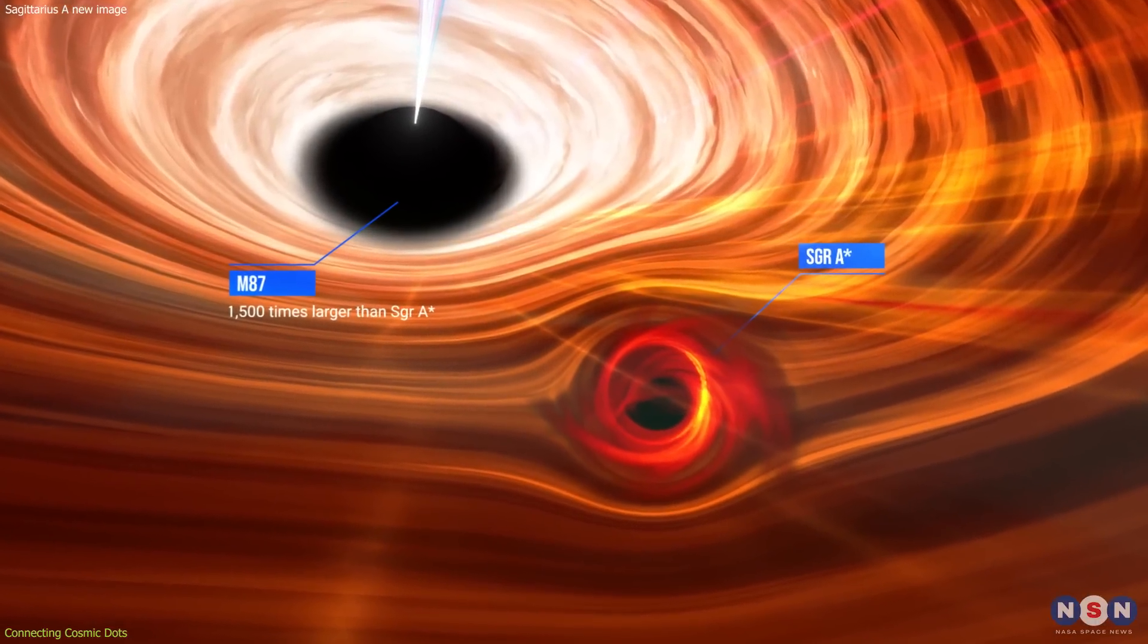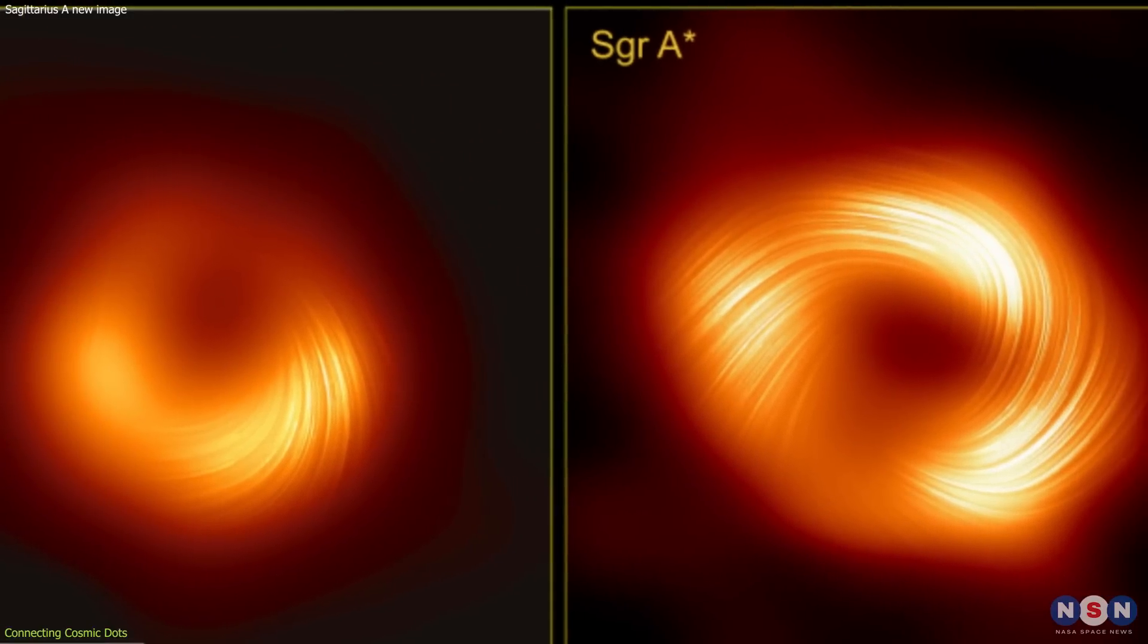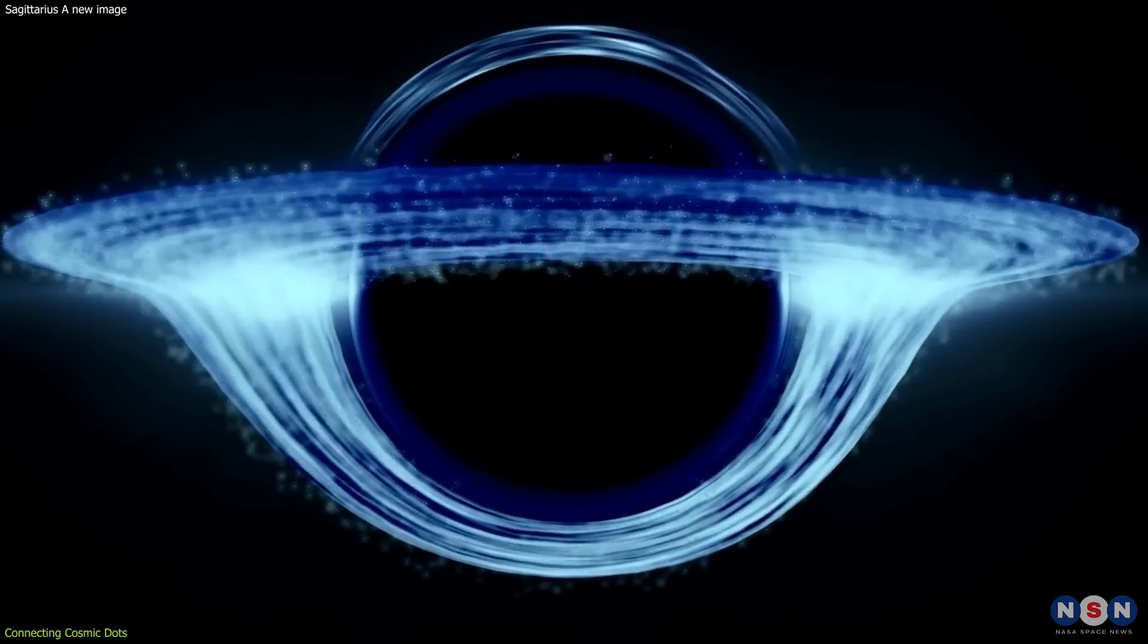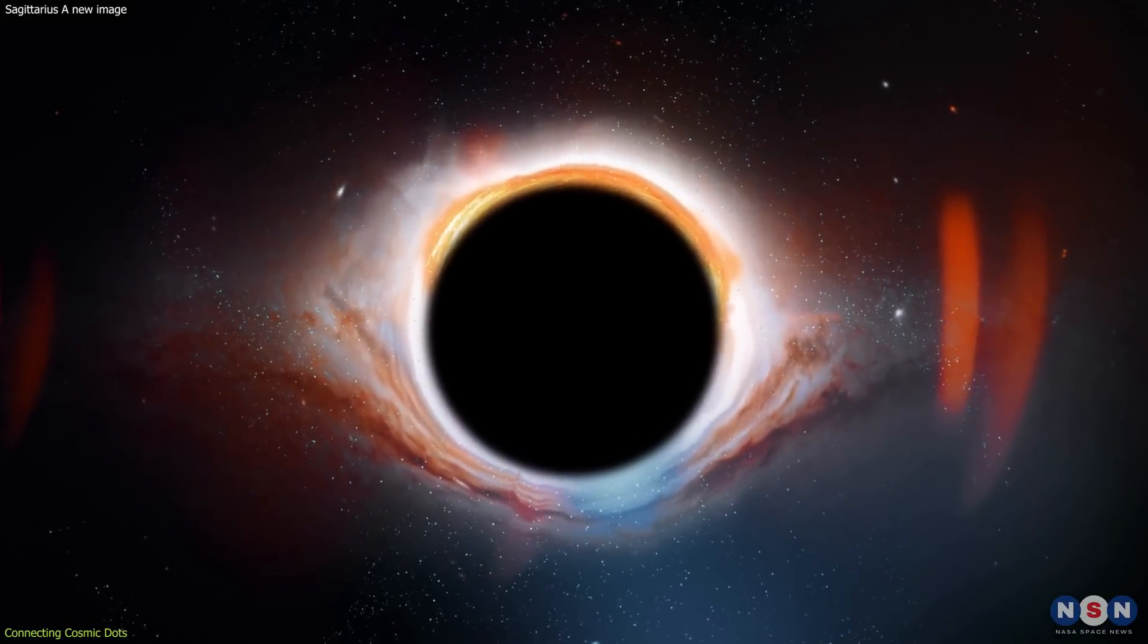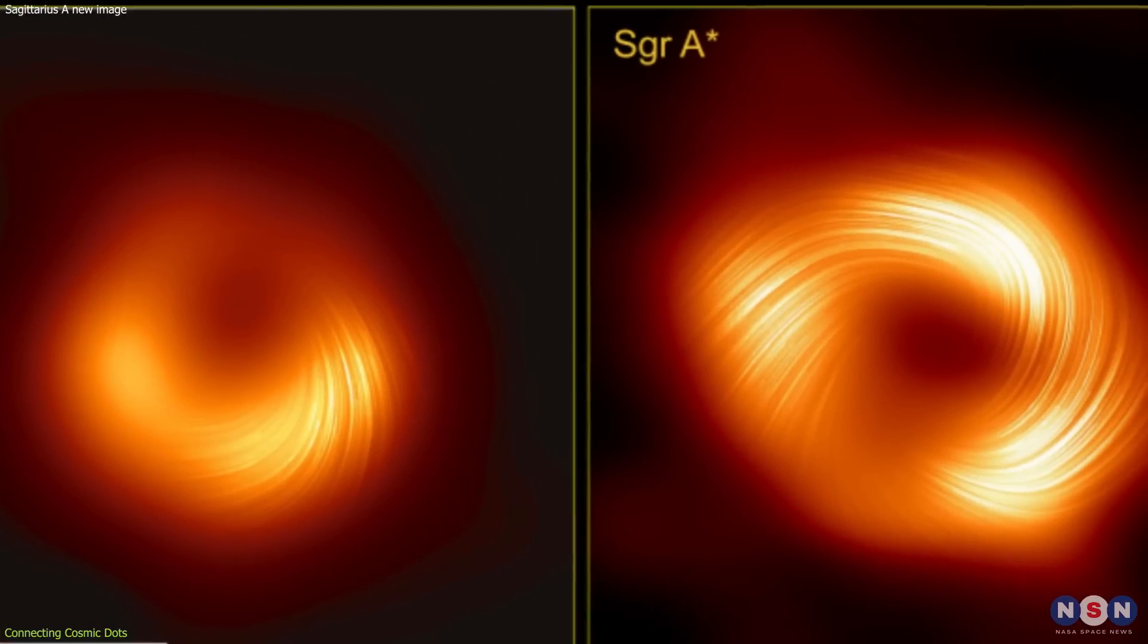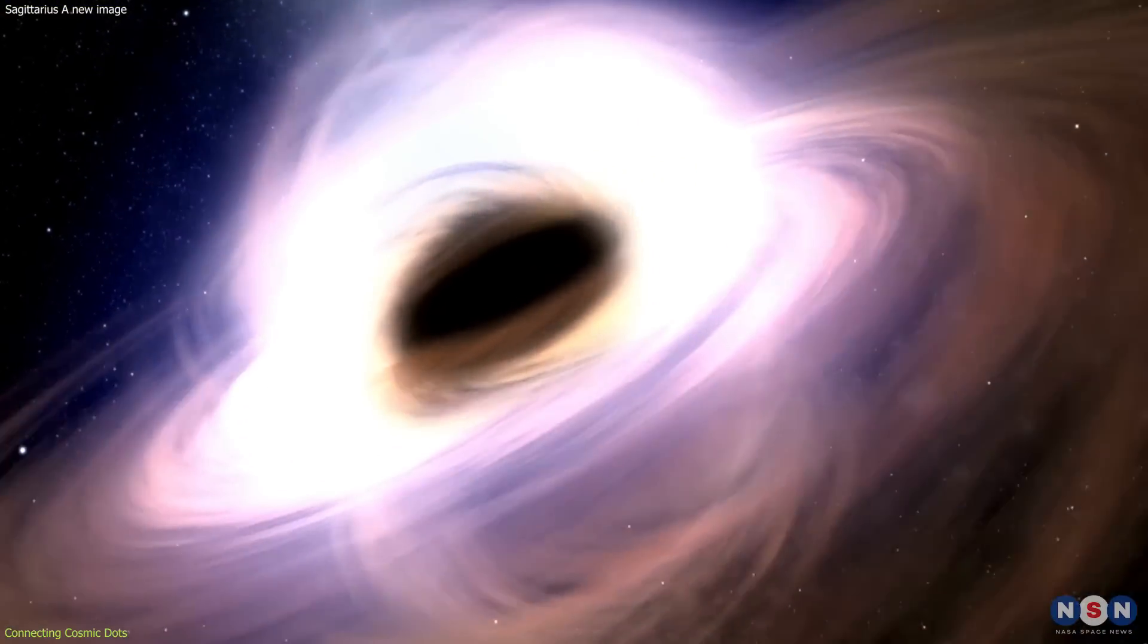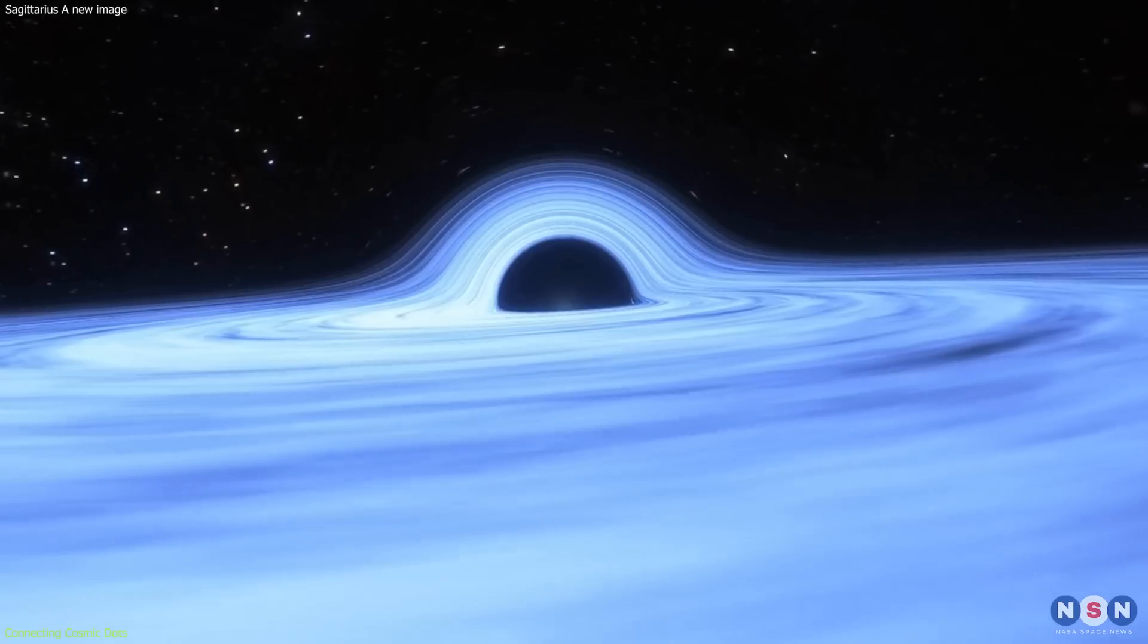Despite their vast differences in mass and activity, the two black holes exhibit strikingly similar magnetic field patterns. This resemblance suggests a universality in black hole physics, hinting at underlying principles that govern these enigmatic objects regardless of their size or environment. This universality is a powerful concept.